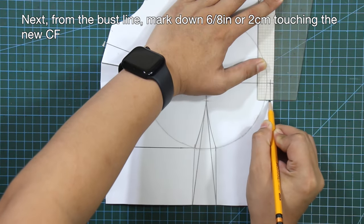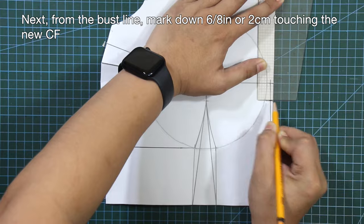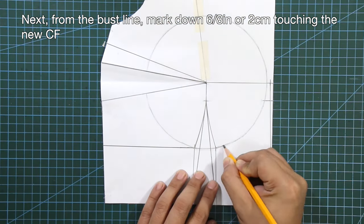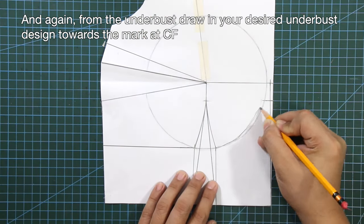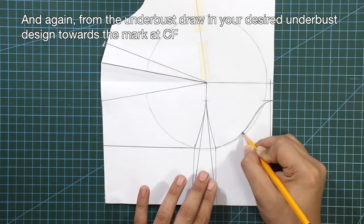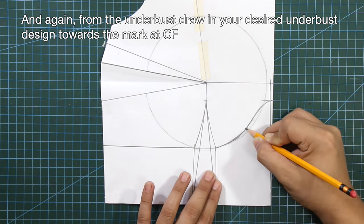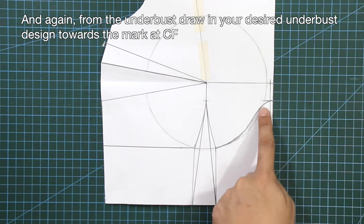Next, from the bust line, mark in 6/8 of an inch or 2 centimeters touching the new center front. And again, from the under bust, draw in your desired under bust design towards the mark at center front.